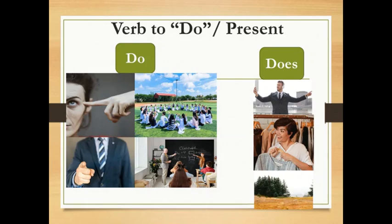This kind of verb, of auxiliary, we can use it also as a main verb. I can say: 'I do my job.' 'He does his job.' But we cannot use the main verb to negate the sentence or to change it into interrogative.